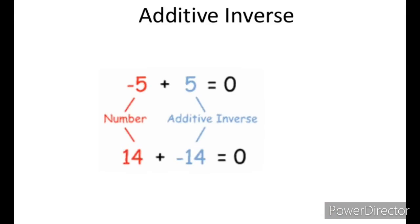Minus 5 is your number, and plus 5 is your additive inverse. You can see in the red color, it is there. 14 is your number, and in the blue color, minus 14 is your additive inverse, that is equals to 0. Copy all this and you should learn it. Thank you very much.